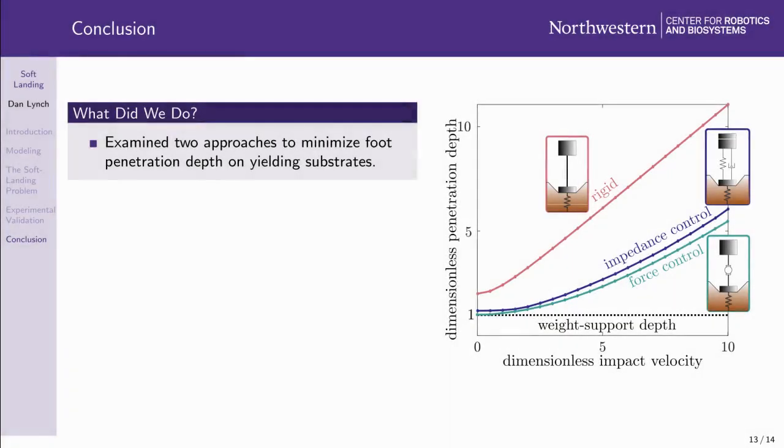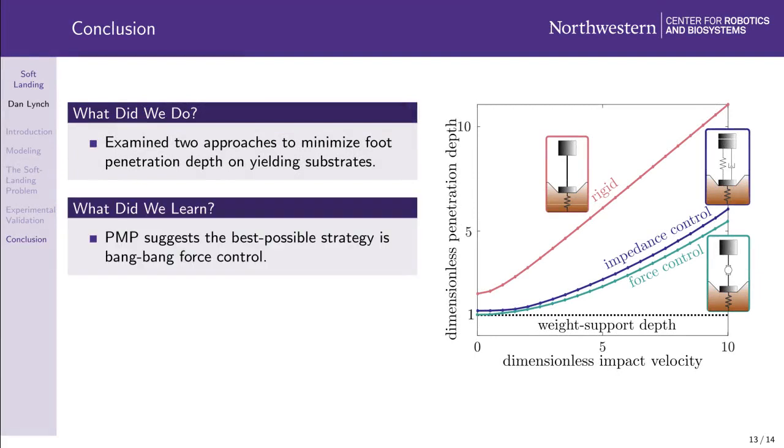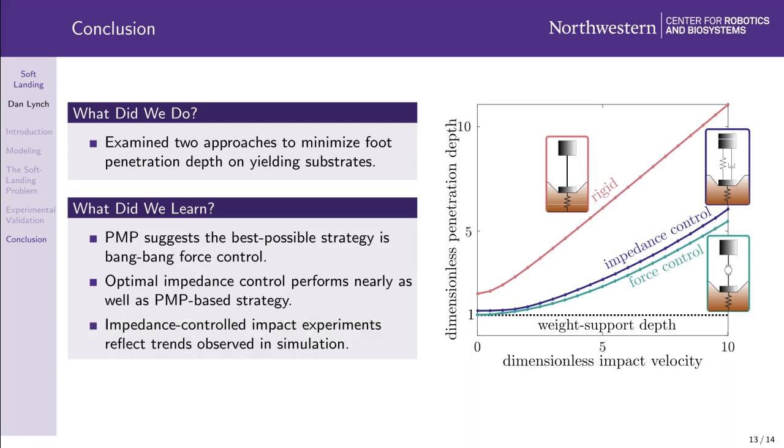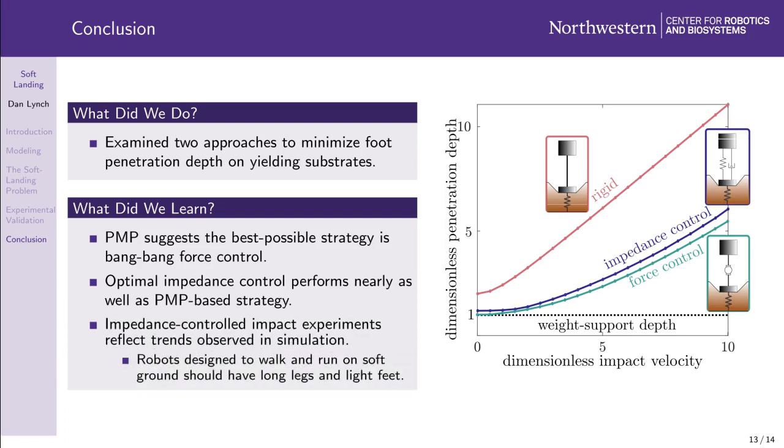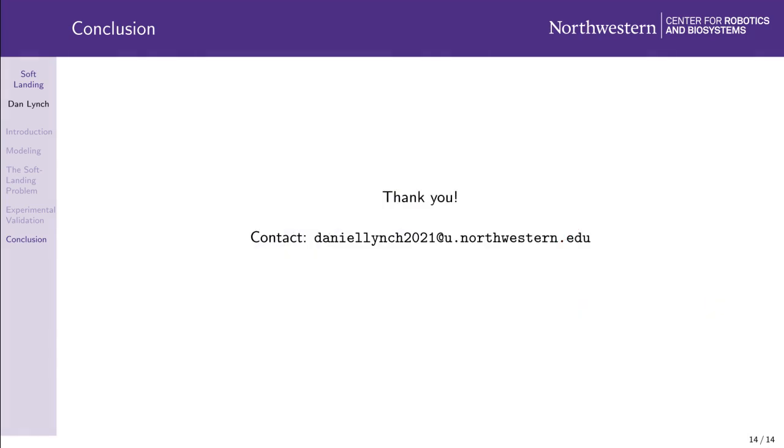To recap, we examined two approaches to the soft landing problem. We learned that the depth-minimizing control policy is bang-bang force control. We also learned that optimal impedance control performs nearly as well as the theoretically optimal bang-bang force control policy. Due to impedance control's relative ease of implementation, we were able to perform a systematic granular impact study that confirmed the optimal impedance trends we observed in simulation. These trends suggest that robots designed to walk and run on soft ground should have long legs and light feet, and that impedance must account for the desired gait. Thank you for watching. I am happy to answer questions and discuss further using the email address provided on this slide.